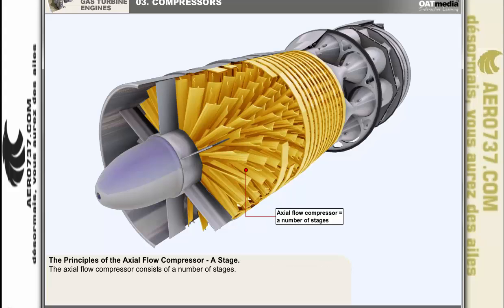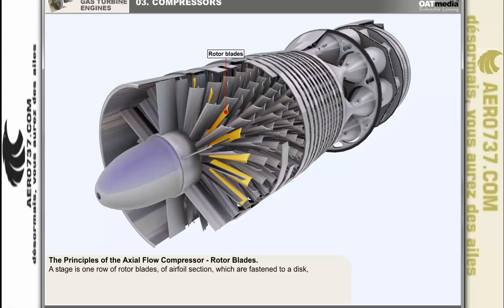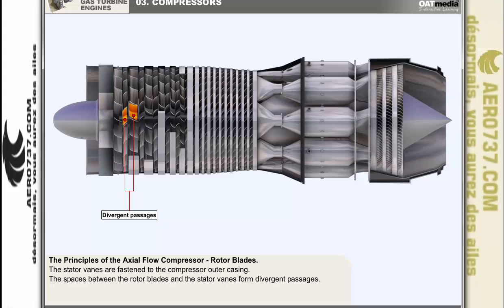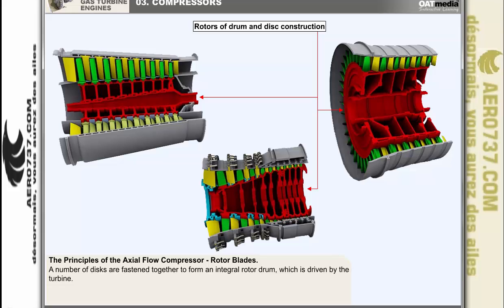The axial flow compressor consists of a number of stages. A stage embodies one row of rotor blades of airfoil section, which are fastened to a disc, followed by one row of stator vanes, also of airfoil section. The stator vanes are fastened to the compressor outer casing. The spaces between the rotor blades and the stator vanes form divergent passages. A number of discs — the number equating to the number of stages — are fastened together to form an integral rotor drum, which is driven by a turbine.